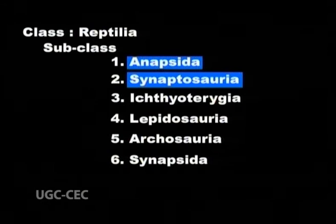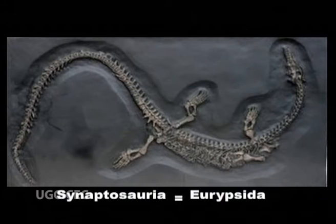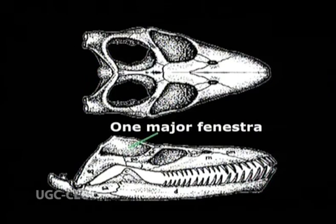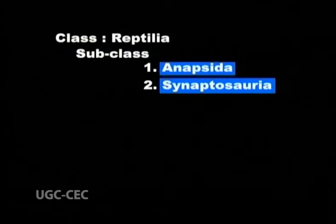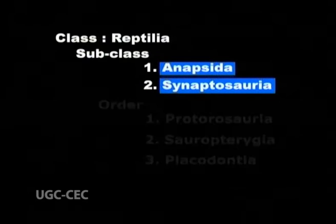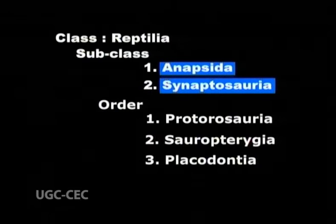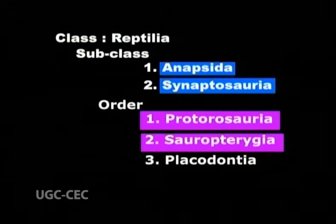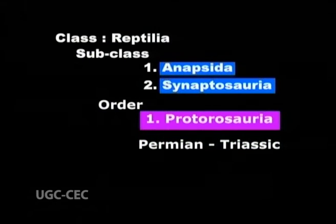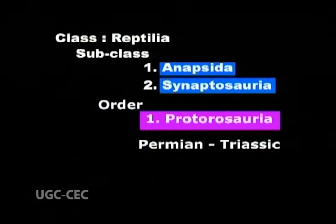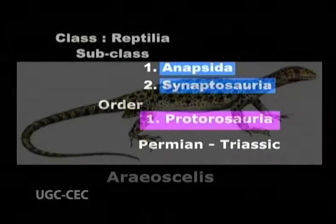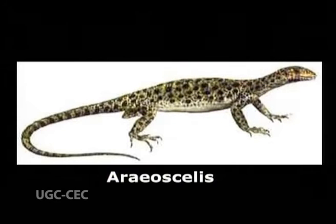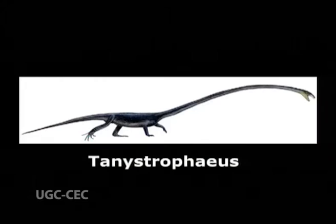Subclass 2, Synaptosauria, means Euryapsida — vertebrates that possess skulls with one major fenestra in the region of the temporal bone. Subclass Synaptosauria comprises three orders: Protorosauria, Sauropterygia, and Placodontia. Order 1, Protorosauria, evolved in Permian and persisted up to Triassic. Examples are Avicella and Tanystropheus.